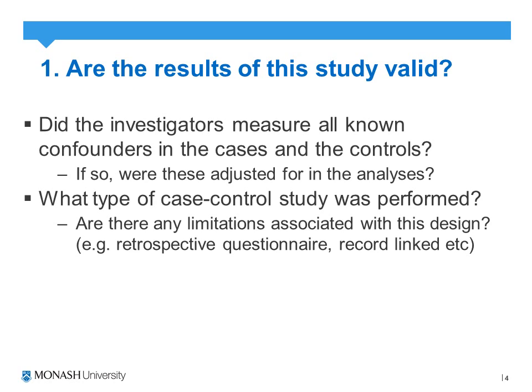The third and fourth questions relate to methodology. The third question asks: did the investigators measure all known confounders in the cases and controls? We can look at baseline characteristics and match cases and controls on demographics such as age, sex, comorbidities, and other risk factors. If there are differences, statistical analyses should have been done to adjust for them, so that any difference in exposure and outcome can be attributed to the actual exposure and not to confounding factors.